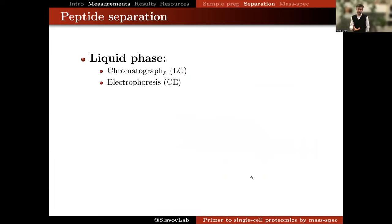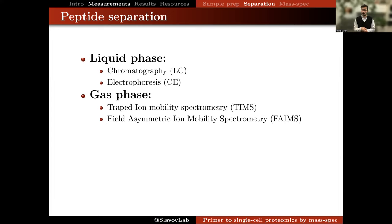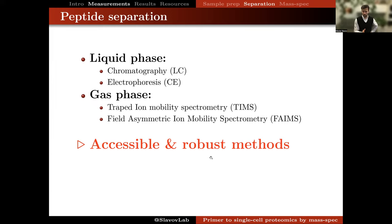After sample preparation, the next stage is separation of the peptides, which can happen in liquid phase using liquid chromatography or capillary electrophoresis, or in gas phase using trapped ion mobility spectrometry or FAIMS. The quality of separation concentrates peptides of the same sequence into packets that maximize sensitivity, and is very important for achieving both deep proteome coverage and quantitative accuracy and precision. There are accessible and robust methods for high-performance peptide separation.